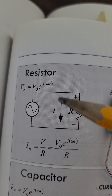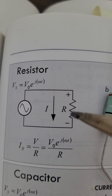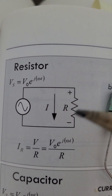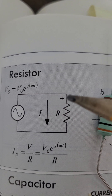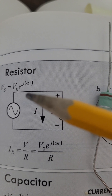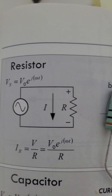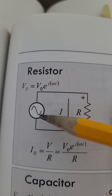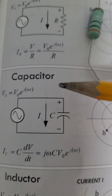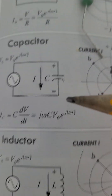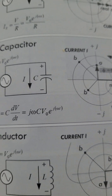The voltage of the source is the input, and the current flowing as a result is the output. When current flows in a given direction, one terminal becomes positive and the other negative. This applies to all three elements: for the resistor, capacitor, and inductor, the voltage is the input and the current is the output.